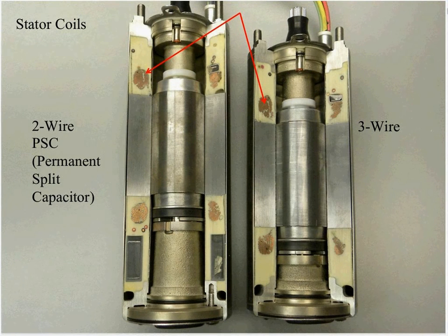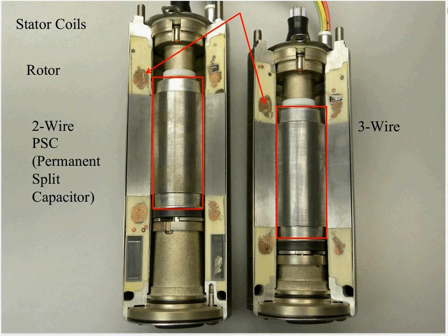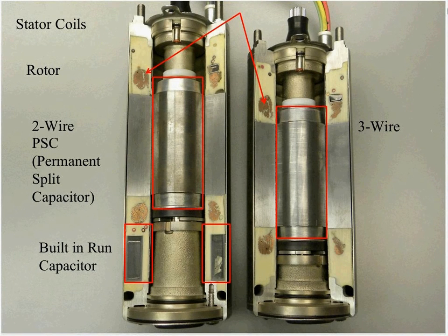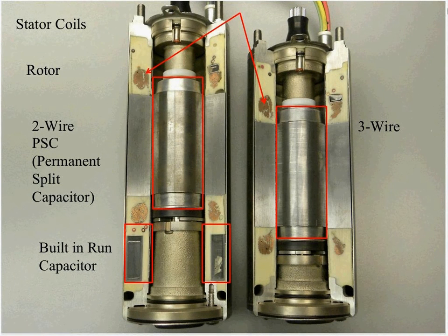We're going to talk more about why it's important that it's a run capacitor. The next thing we're going to look at is the Kingsbury-type bearings. There are three shoes and a carbon piece that make up those bearings, and they are lubricated. There is a small amount of fluid in this motor, used to hydroplane the carbon piece on top of the stainless steel shoes. This is also why it's important to get that motor up to 1,800 RPMs in one second, so you don't wind up with those shoes being galled and locking up the rotor.